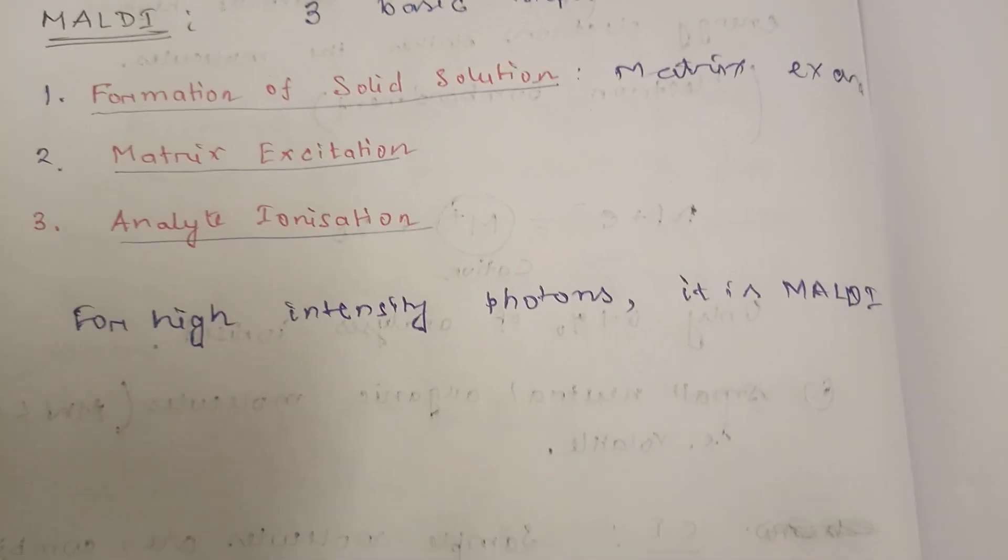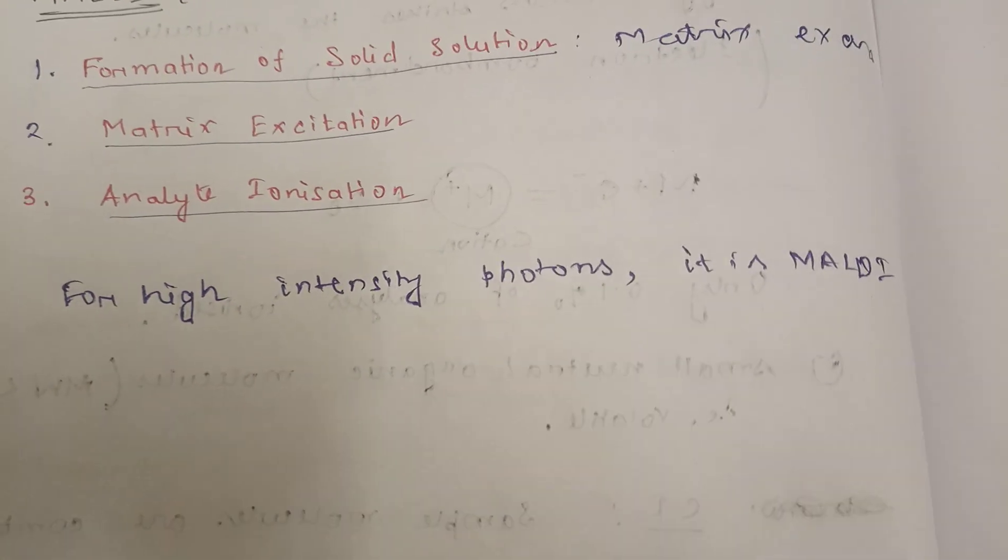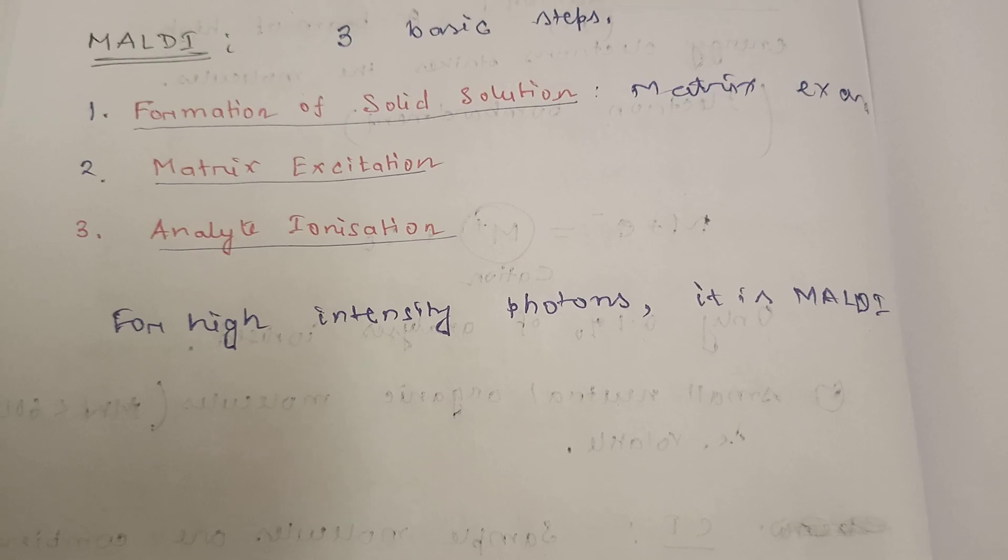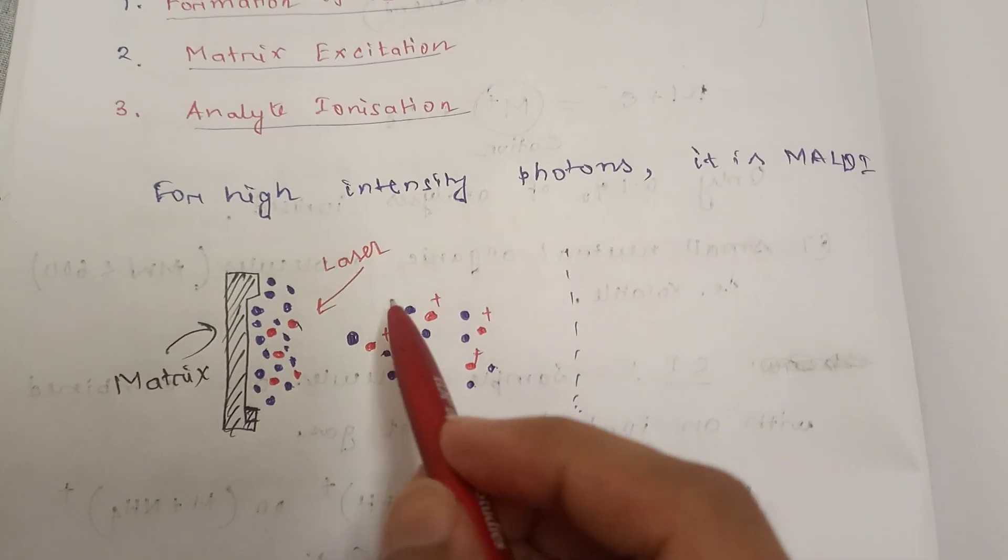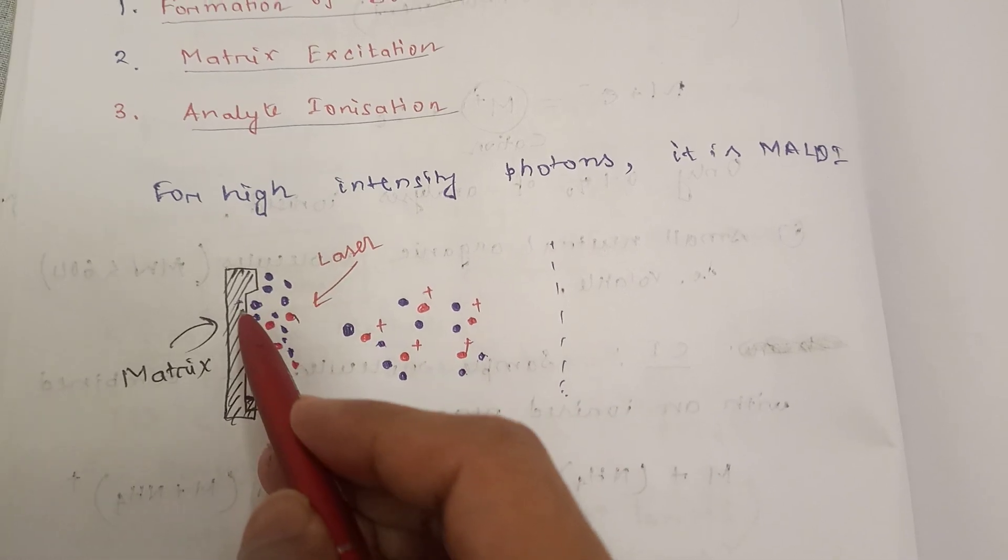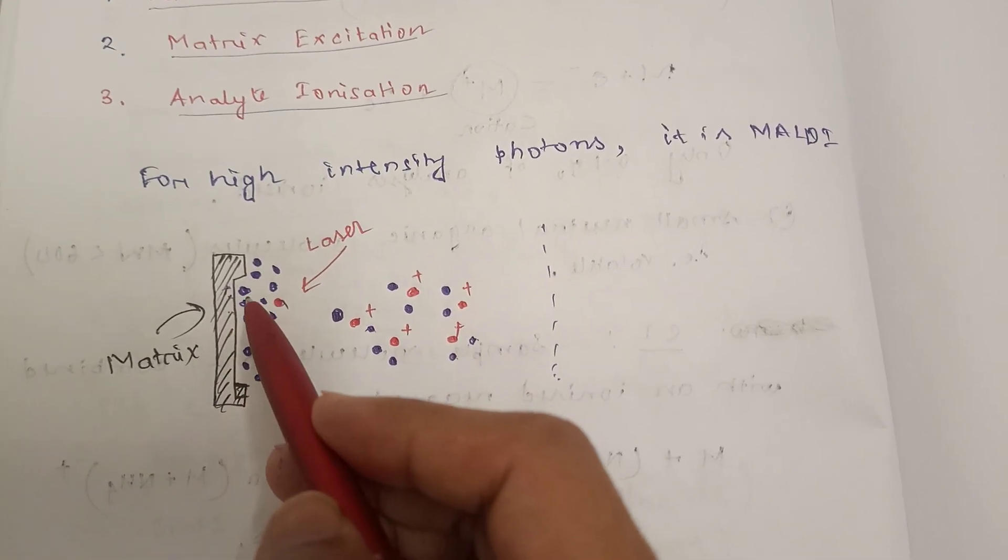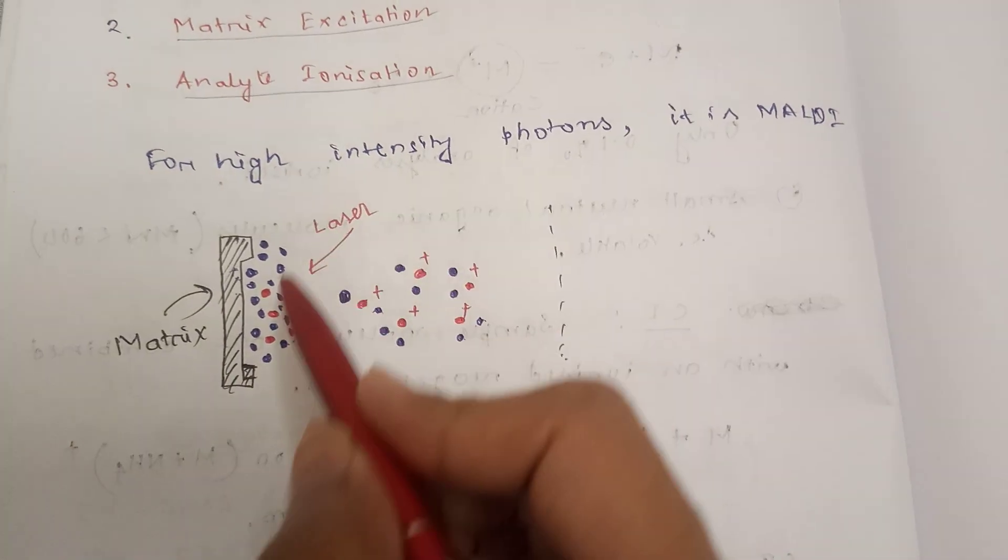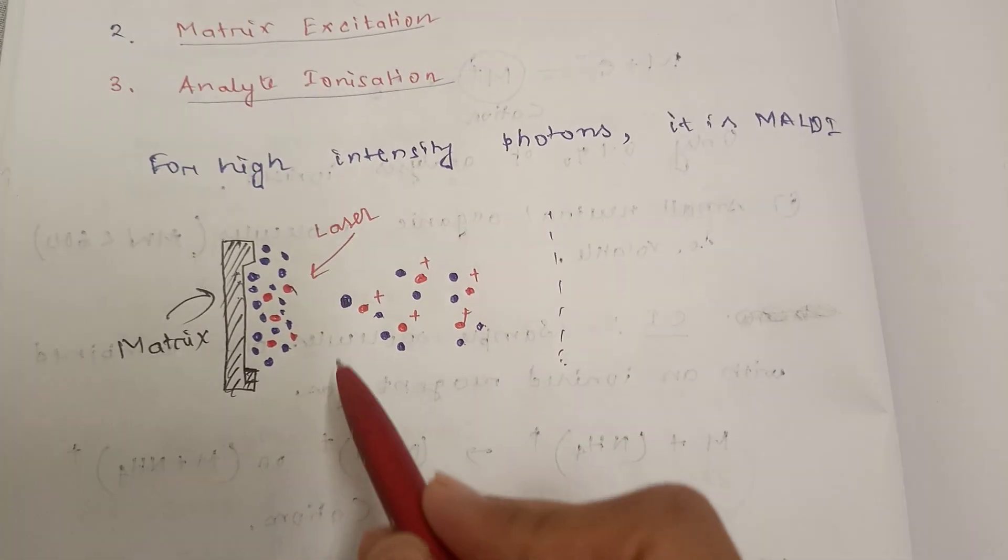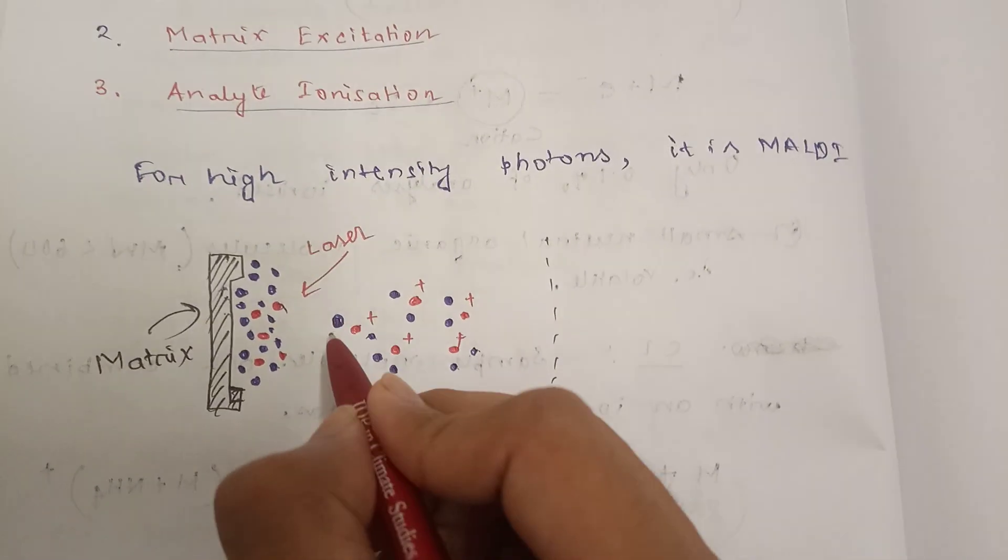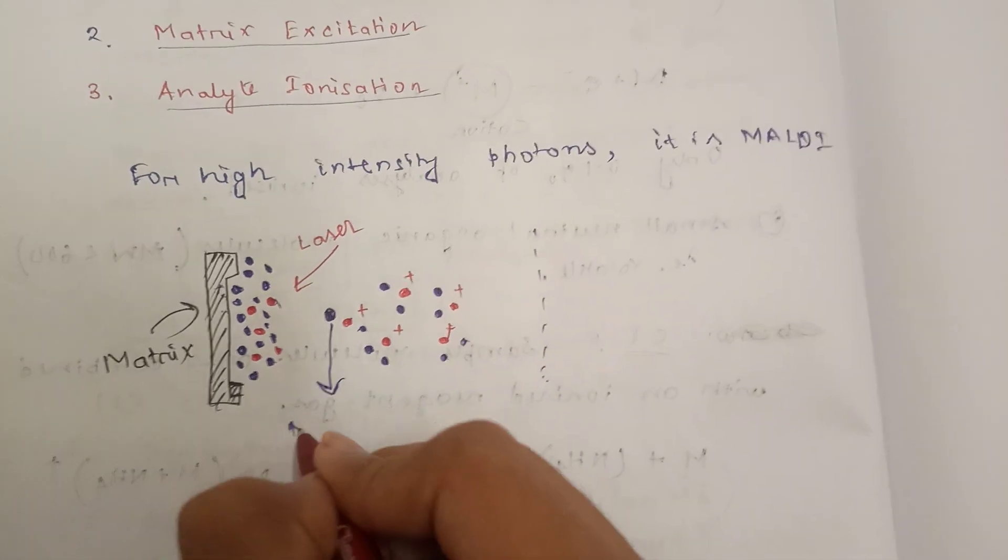Then matrix excitation. The laser beam is focused onto the surface of the matrix-analyte solid solution. In this diagram you can see the matrix chromophore is absorbing the laser irradiation, causing rapid vibrational excitation and bringing about localized disintegration of the solid solution. The blues are matrix ions and the reds are analyte ions.